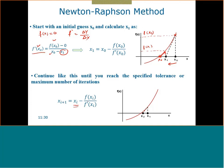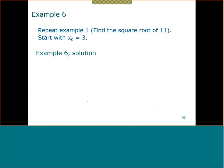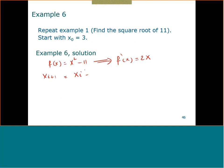Let's jump into an example. We will solve the same example we did before using the bisection method and the simple point method, now using Newton-Raphson. f(x) = x² - 11, so f'(x) = 2x. Therefore, x_{i+1} = x_i minus (x_i² - 11) divided by 2x_i.